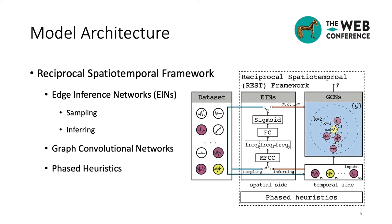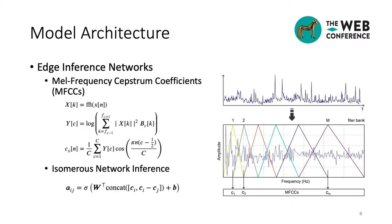Finally, to make spatiotemporal predictions, we integrate existing graph convolutional networks, like DCRNN or graph wavenet into the REST framework. Now, let's zoom in to the edge inference networks. To infer the multimodal edge labels, it's necessary to obtain useful features of time series. Since there exists considerable noise in time series, in this work, we analyze the time series in the frequency domain.